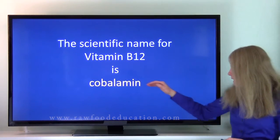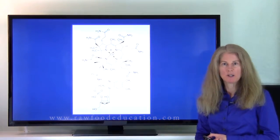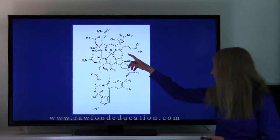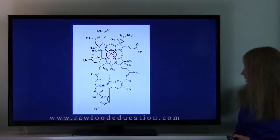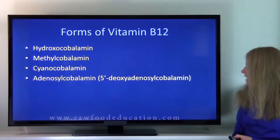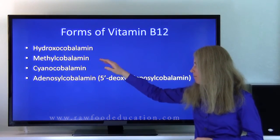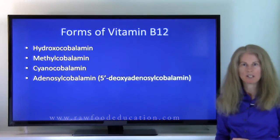Now, vitamin B12 is very appropriately named. It's given the name cobalamin, and the reason why is because if we look at the vitamin B12 molecule, we see at the center of the molecule cobalt. There it is right there. Now, the forms that we're going to talk about today are hydroxocobalamin, methylcobalamin, cyanocobalamin, and adenosylcobalamin.